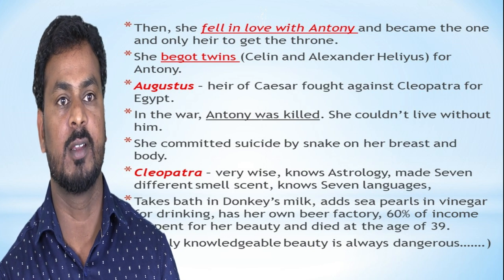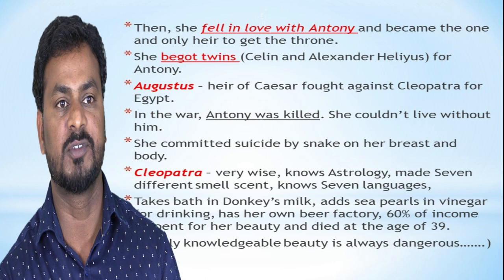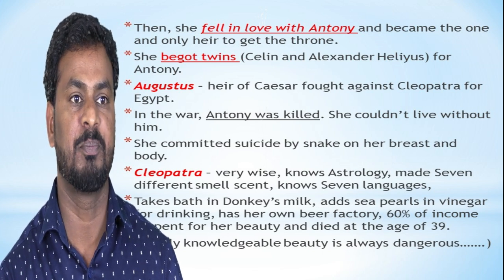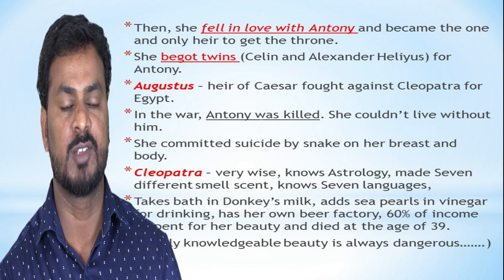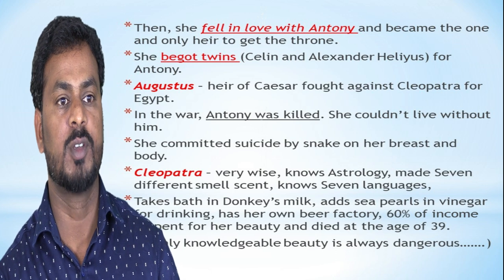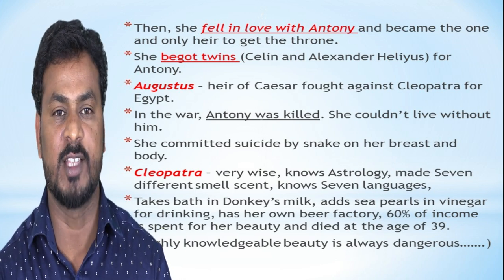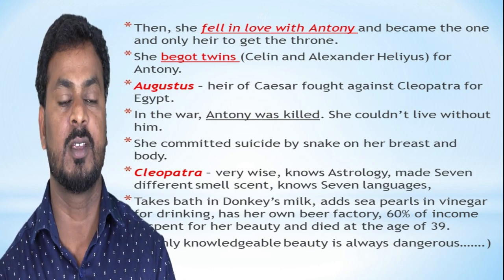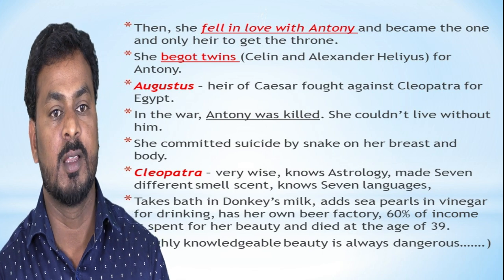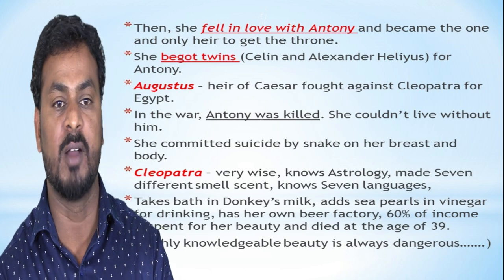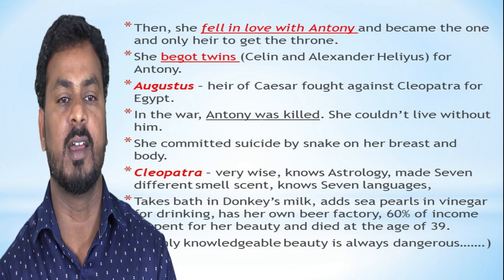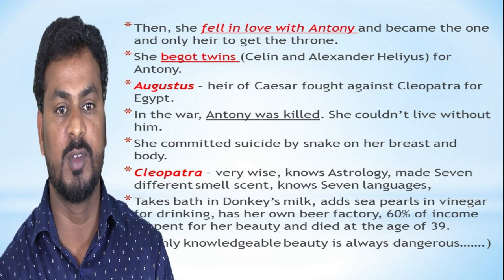She bore twins with Antony. Augustus Caesar fought against Cleopatra for Egypt. In the war, Antony was killed. She couldn't live without him and committed suicide by placing a snake on her breast. As everybody knows, Cleopatra was very wise. She knew astrology, she made seven different scents, she knew seven languages, she used to walk in dark smoke, she had sea pearl and vinegar for drinking, she had her own beer factory, and 60% of the income of Egypt was spent for her beauty. She died at the age of 39. Highly knowledgeable beauty is always dangerous.